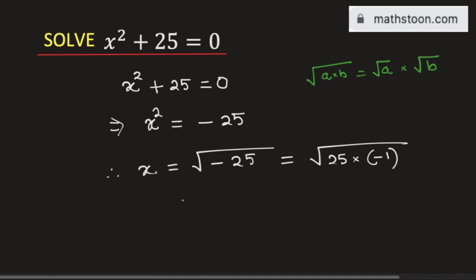This can be written as square root of 25 times square root of minus 1.